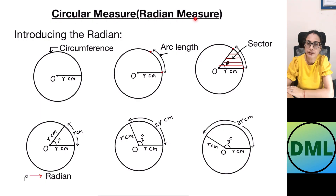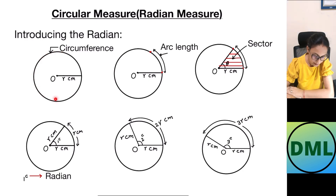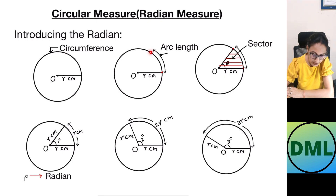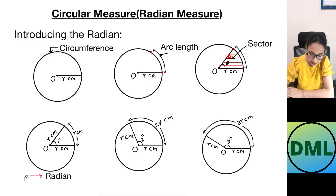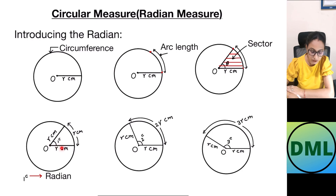Circular measure, or radian measure. First we will see what is radian measure and what is the relation between radian measure and degree measure. If you can see the circle here, this is the center of the circle, this is the radius r, and this is the circumference of the circle. If I take any point on the circumference and join it, this is your arc length. If I join this point with the center of the circle, this will become one sector. If I measure the arc length such that it equals the radius r — so this is r, this is also r, and my arc length is also r.